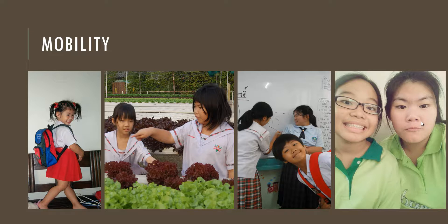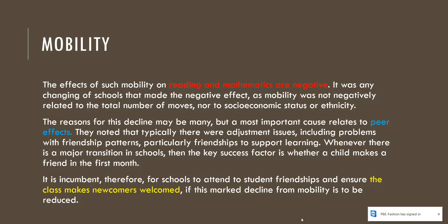When I dug deeper into what John Hattie said, he mentioned criteria for this: it might not necessarily be negative depending on how the school prepares the student, how the family prepares the student for changing to a new school, and how the class welcomes newcomers. So after this sample, most of the research inside this book has to be read very carefully. If we see only a few things, it may look like a very positive, high effect, but in detail there are conditions.